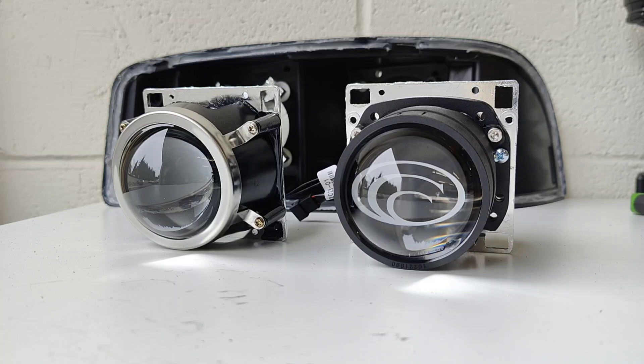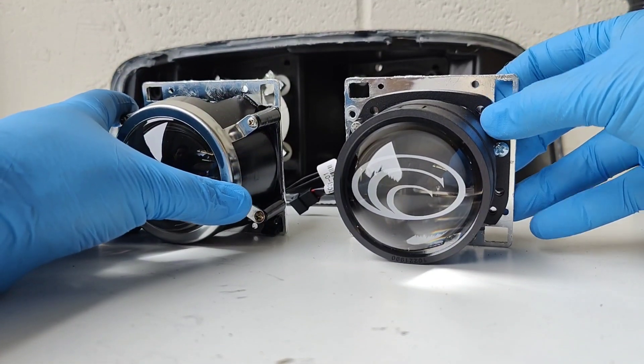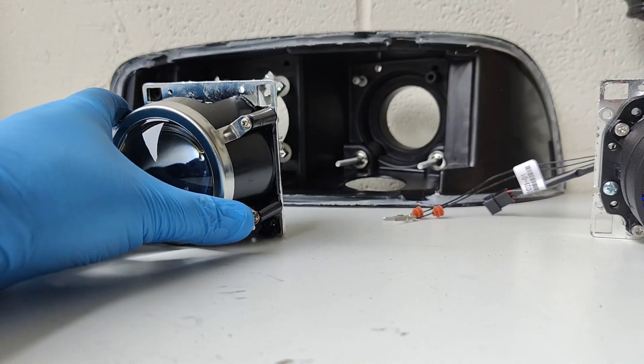What's up guys, A1A Retrofits here. Today we're going to show you how to fabricate a bracket when a bracket doesn't exist. These headlights are from a 2000-2006 GMC Sierra Yukon Denali, the Spec D style housings.